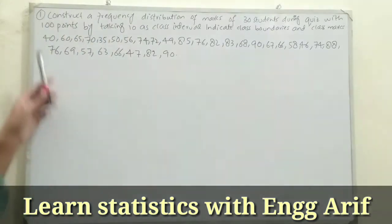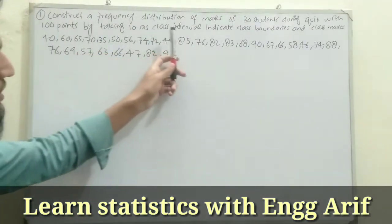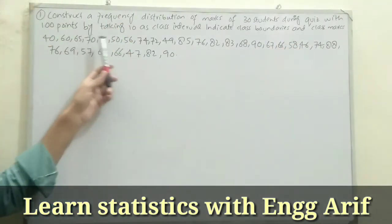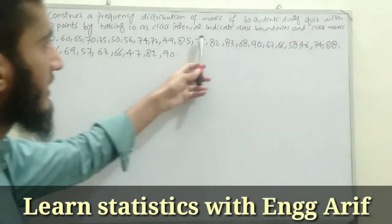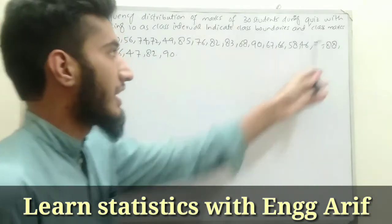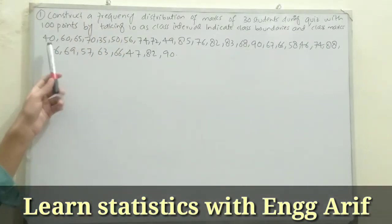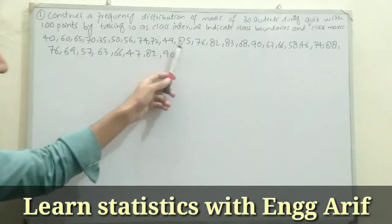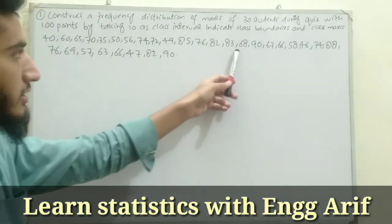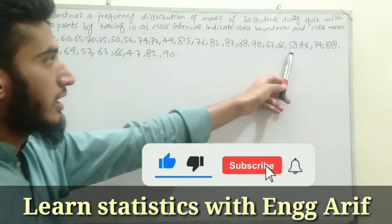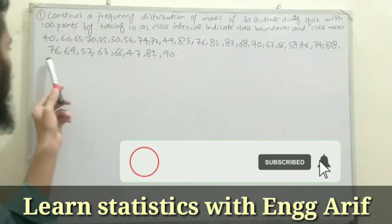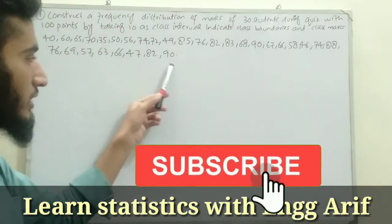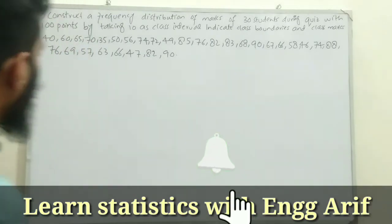Question number one tells us to construct a frequency distribution of marks of 30 students during a quiz with 100 points, by taking 10 as a class interval, and indicate class boundaries and class marks. The given data is: 40, 60, 65, 70, 35, 50, 56, 74, 72, 49, 85, 76, 82, 83, 68, 90, 67, 66, 58, 46, 74, 88, 76, 69, 57, 63, 66, 47, 82, and 90 — a total of 30 numbers.